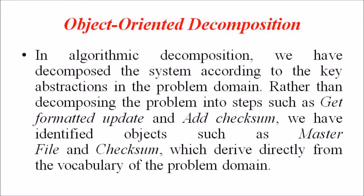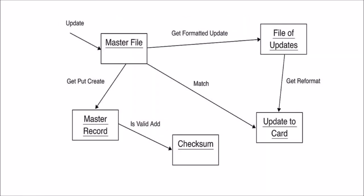When it comes to object-oriented decomposition, rather than decomposing the system according to algorithmic steps such as get-formatted-update and add-checksum, we have identified objects such as master file and checksum which derive directly from the vocabulary of the problem domain. Although both designs solve the same problem, they do so in quite different ways. In the object-oriented decomposition, we view the world as a set of autonomous agents that collaborate to perform some higher-level behavior. Get-formatted-update does not exist as an independent algorithm; rather, it is an operation associated with the file-update object.